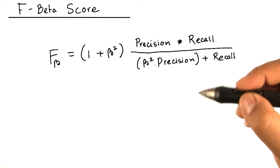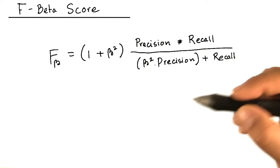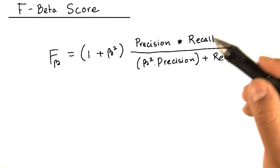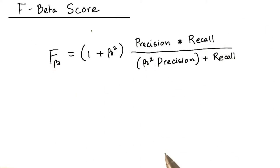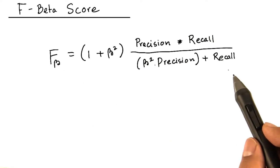Instead of calculating precision and recall individually and looking at each to make a decision as to the performance of a classifier, we can actually use something called the F beta score. This is the general definition of the F beta score.